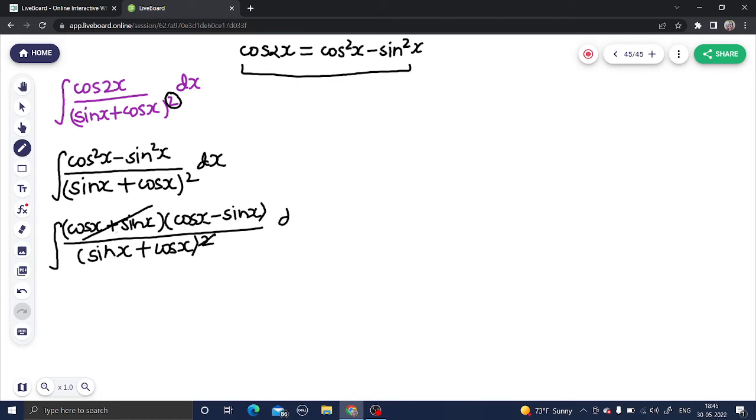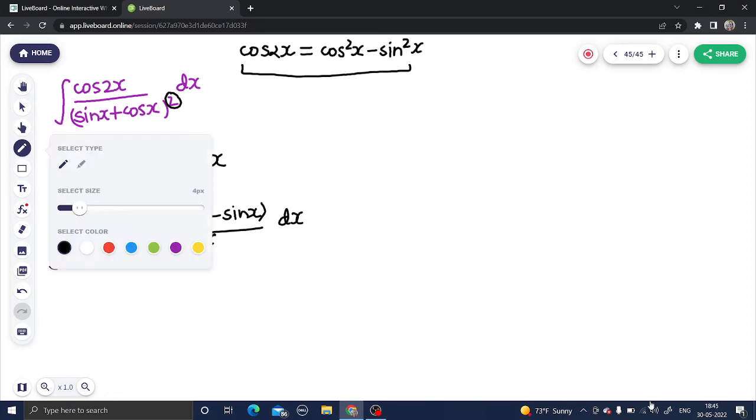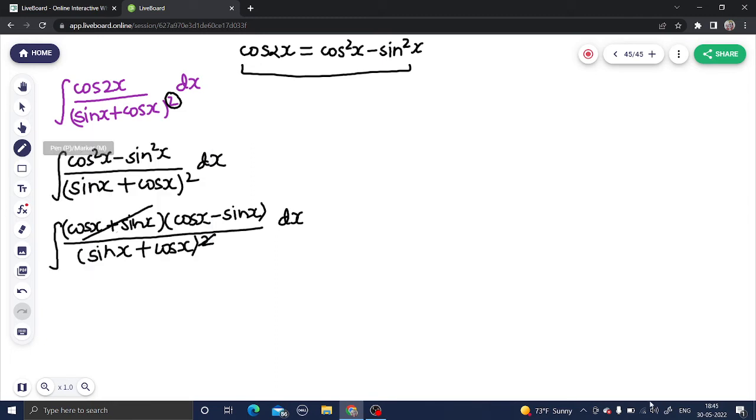Now the problem becomes very easy because it goes directly into substitution. In denominator you have sine x plus cos x. So if you go for substitution you will go for denominator as t. So sin x plus cos x as t.